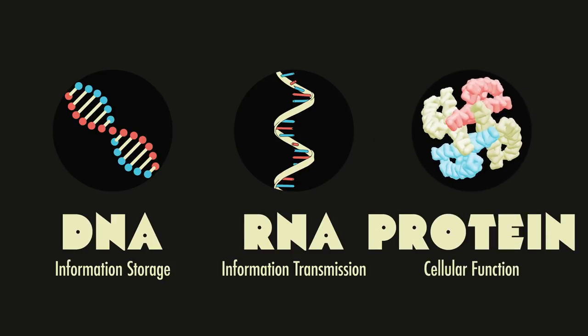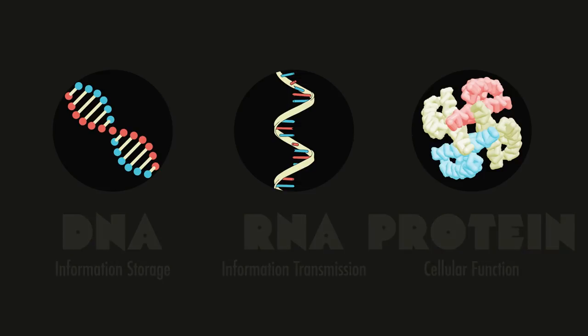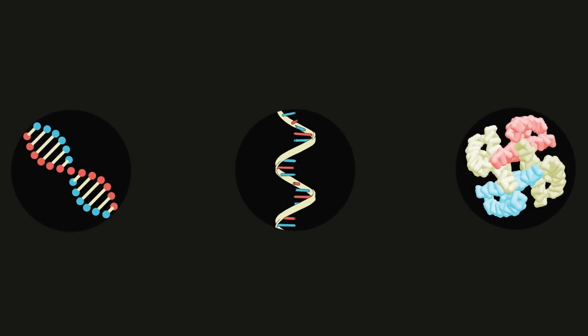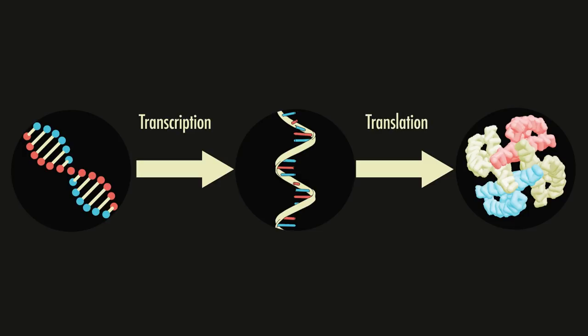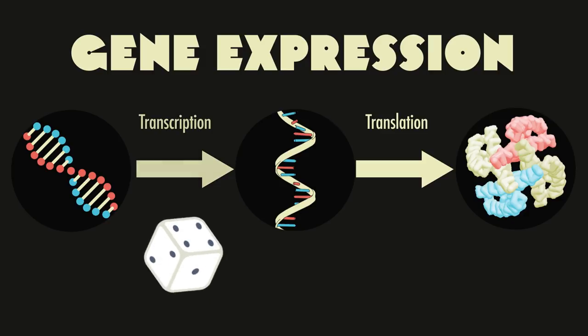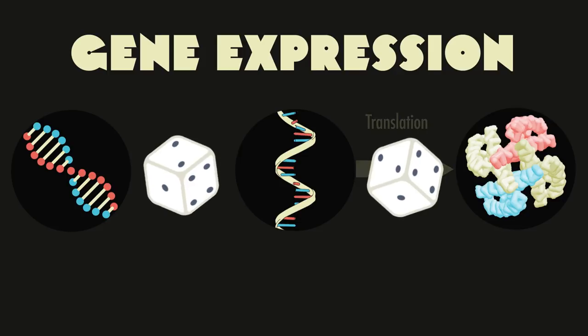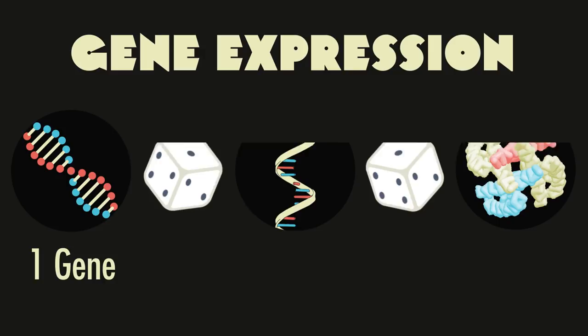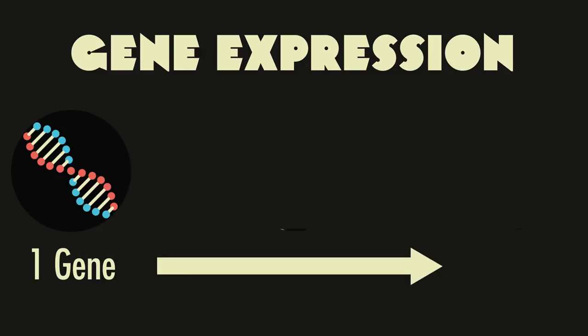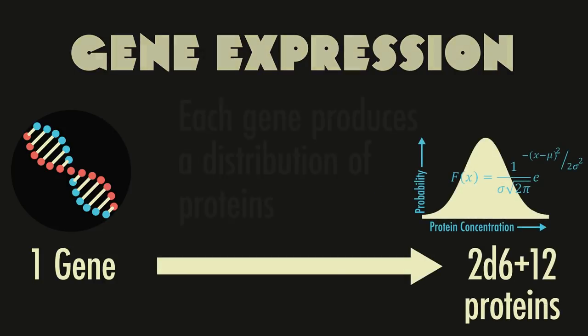which are the workhorses of the cell. We're all taught this so-called central dogma of molecular biology as a straightforward linear path, when in reality gene expression can only be understood as a complex probabilistic phenomenon. Each step in gene expression depends on luck. The right molecules in the right place at the right time. Therefore, one gene does not produce the same number of proteins in each cell. Each gene produces a distribution of proteins.